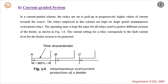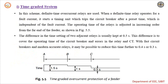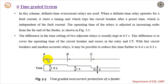Next we have the current graded system. In this scheme, instantaneous overcurrent relays are used. The relays are set to pick up at progressively higher values of current towards the source. One drawback of the time graded system is that if there is a huge fault current beyond section C, the equipment at the source end may get damaged, since it will take as long as 1.5 seconds to isolate the faulty part, which may damage the equipment connected to the source end.